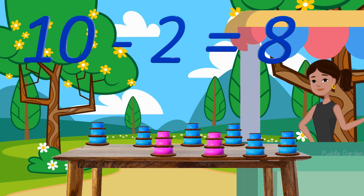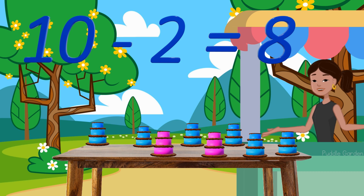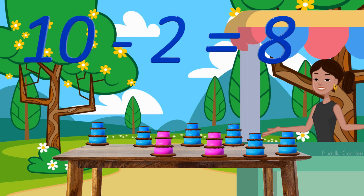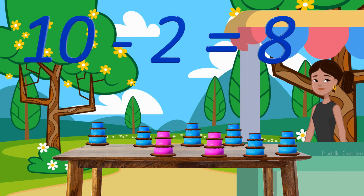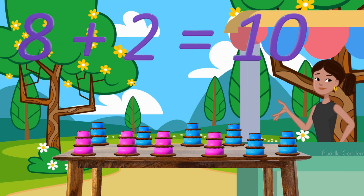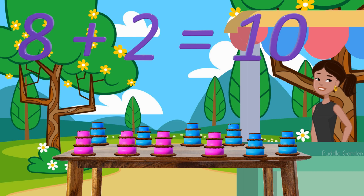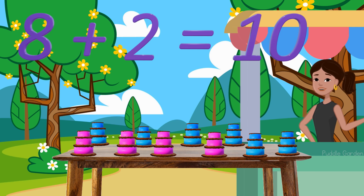So if we have eight and we need to restock up to 10, what do we add? Right now we have eight and we want 10. So: eight, nine, and 10. We had to add two. Great job! Thanks for running the bakery shop with me today.